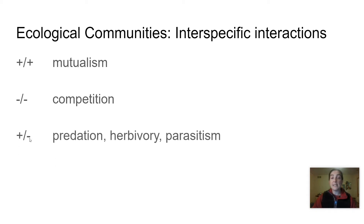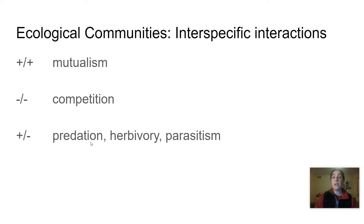The third category is plus-minus relationships. The most obvious one is predation — a predator-prey interaction is obviously good for the predator and bad for the prey. Herbivory is also a type of predation; deer eating grass is good for the deer and bad for the grass, so that's also a plus-minus. And parasitism — things like a tick or a leech — is harmful to the host. If you get bitten by a tick, that's bad for you but good for the parasite, because that's their source of nourishment.